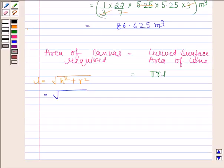In the question, we are given that height is equal to 3 meters and we know that its radius is equal to 5.25 meters. So on substituting values of h and r,